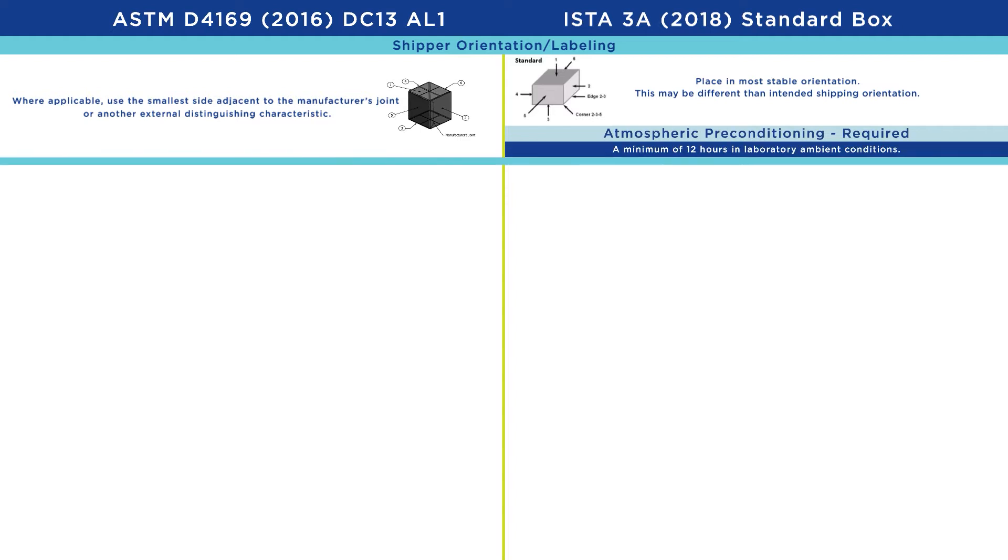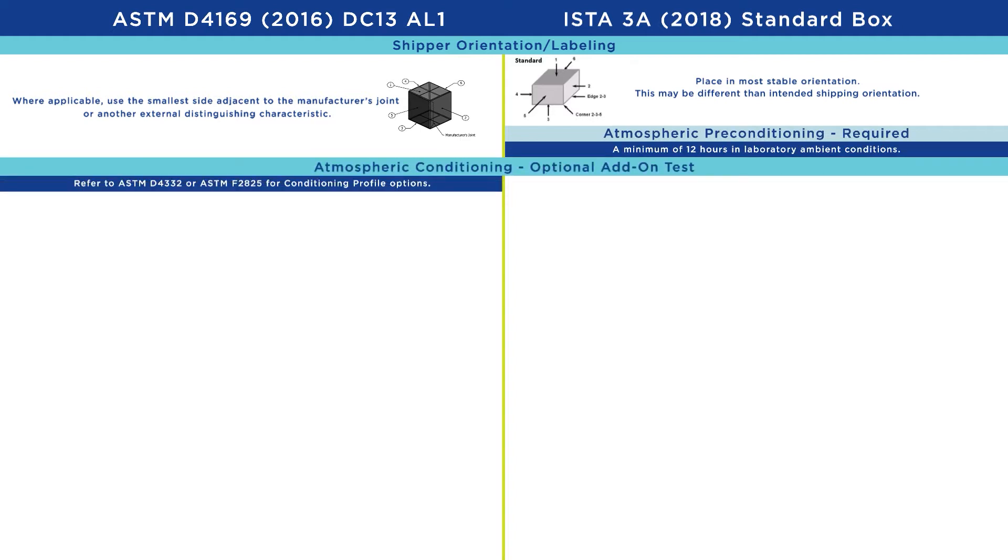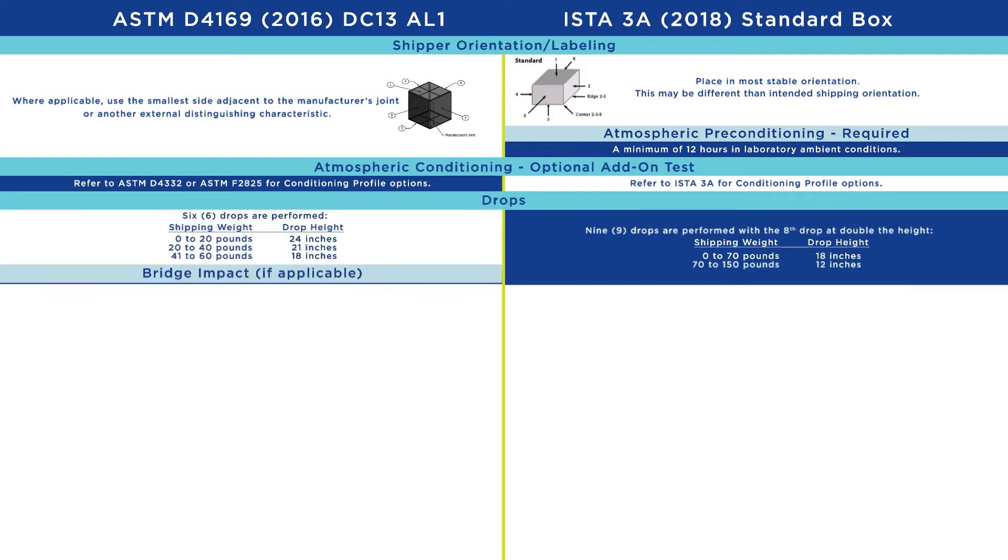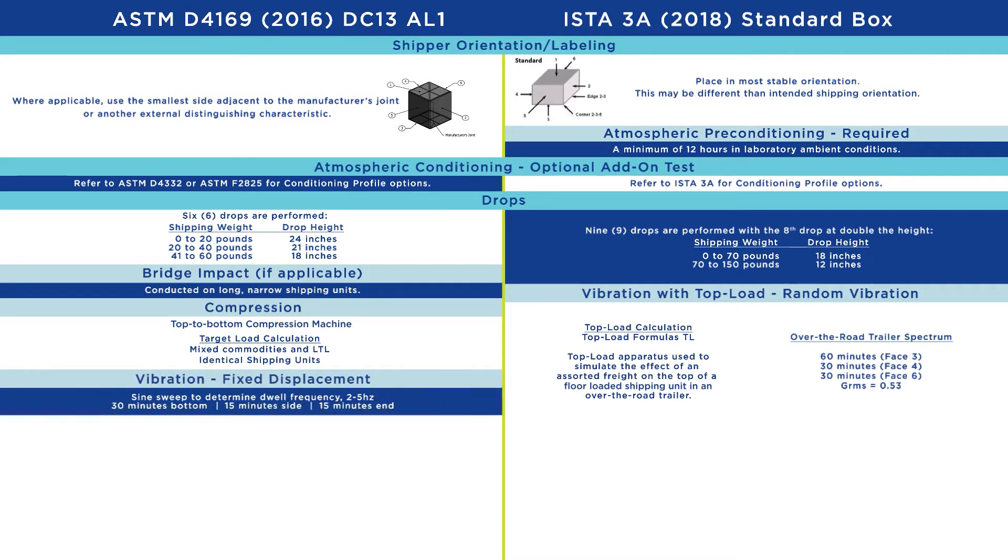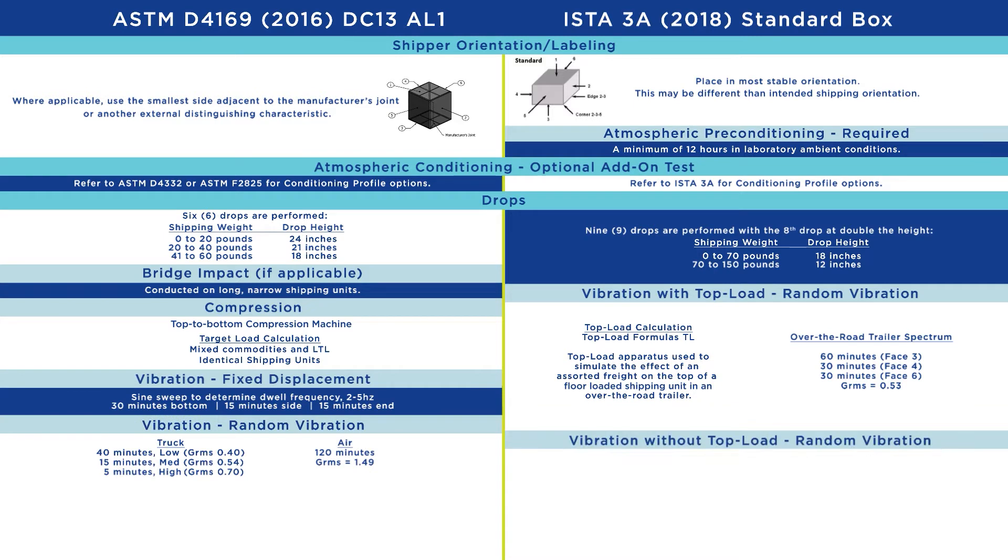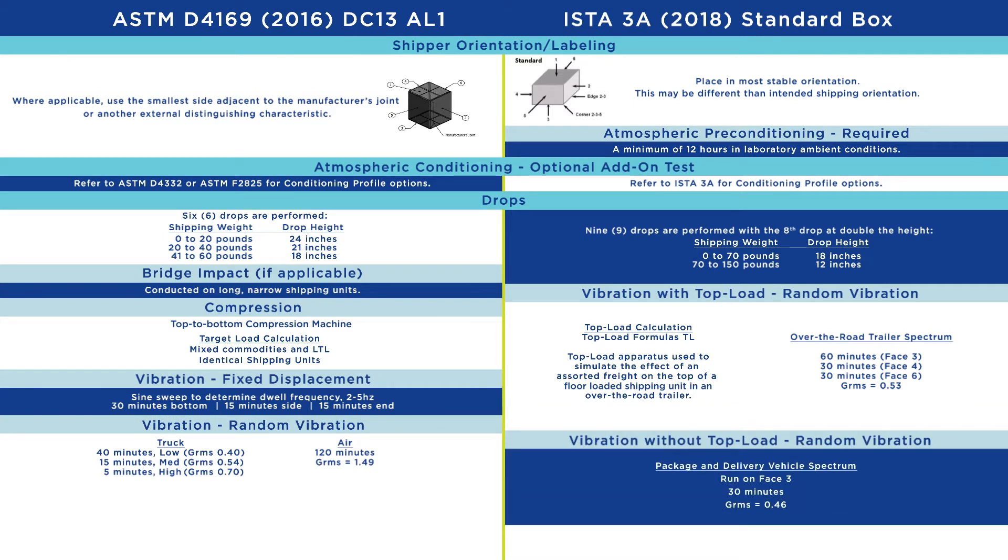Atmospheric conditioning is an optional add-on for both standards. The number of drops performed, as well as drop height, is different for each standard. Vibration testing is conducted at different durations for each standard as well. As you can see, the standards are similar yet different.